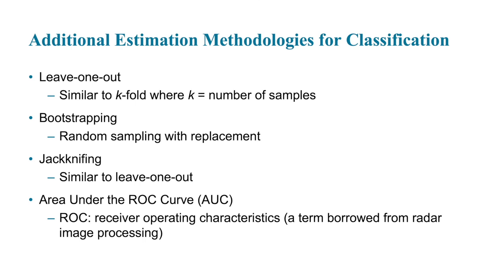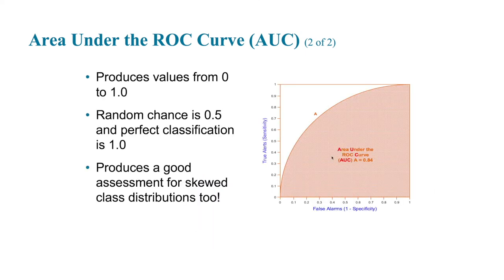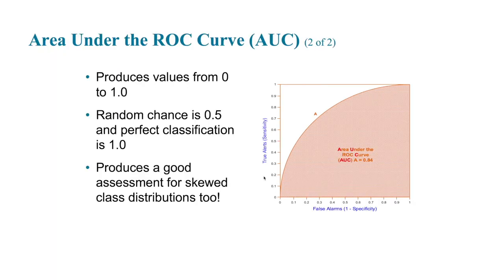The ROC — receiver operating characteristics — is borrowed from radar processing and works with a binary classification system. It produces values from zero to one: random chance is 0.5 and a perfect classification is 1. It produces a good assessment for skewed data classes as well. We're not going to have to do too much with this right now — these estimation and validation tests will be discussed further as we talk about data warehousing and validation models going forward.